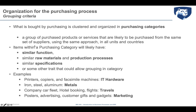Purchasing, after the make-or-buy decision, is assigned to buy certain goods, services, raw materials, components, and capital equipment. These are clustered and organized into the so-called purchasing categories. A purchasing category is a group of purchased products or services that are likely to be purchased from the same set of suppliers, using the same approach in all units and countries. From a strategic sourcing perspective, all the activities lead to the same supply network configuration, the same type of relationship, and the same supplier characteristics.